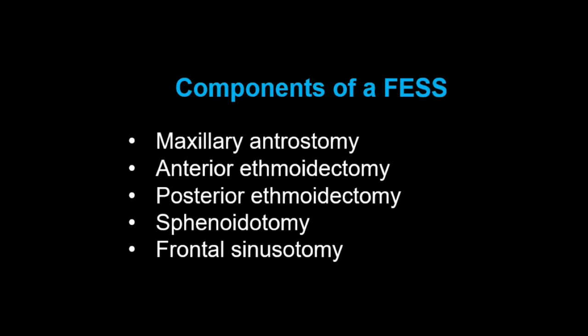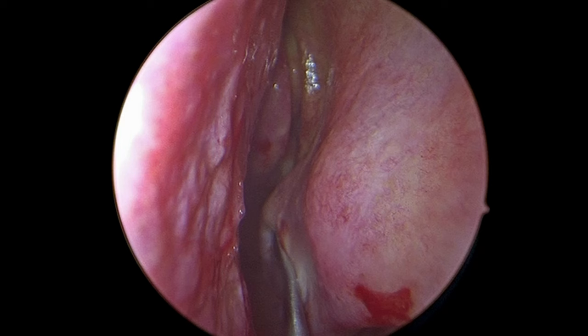We go through steps for a complete FESS, which includes a maxillary antrostomy, anterior ethmoidectomy, posterior ethmoidectomy, sphenoidotomy, and frontal sinusotomy. The patient in this video has a history of chronic rhinosinusitis. Here we're looking in the left nasal cavity. You can see the inferior turbinate, middle turbinate, septum, and left septal spur.